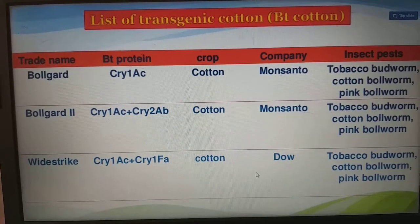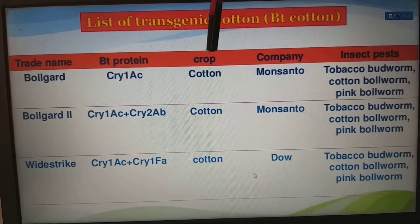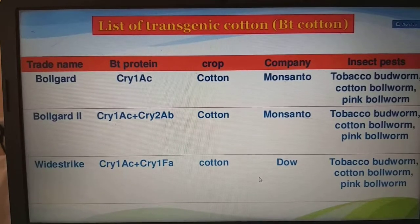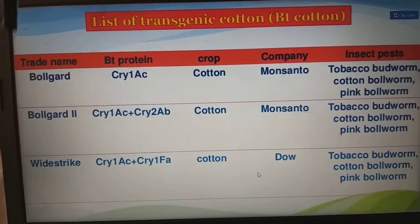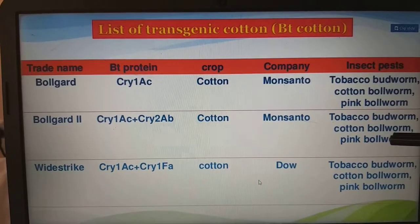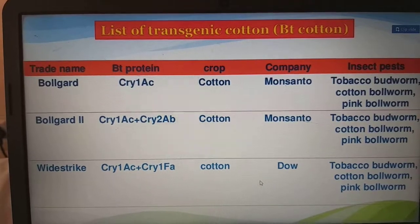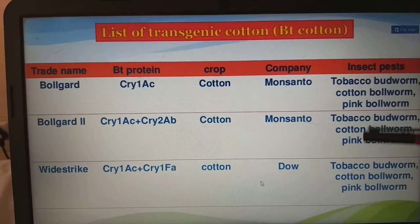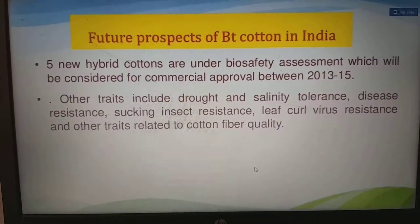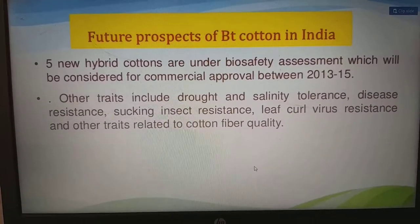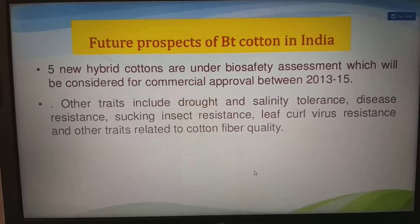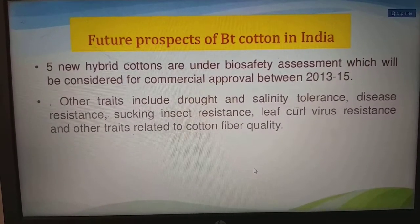The trade names producing Bt cotton include BollGard by Monsanto, which protects against tobacco budworm, cotton bollworm, and pink bollworm. BollGard 2 by the same company targets the same insect pests. WideStrike is produced by Dow, another company producing Bt cotton. Future prospects for Bt cotton in India include five new hybrid cottons under biosafety assessment for commercial approval between 2013 and 2015, with other traits including drought and salinity tolerance, disease resistance, sucking insect resistance, leaf curl virus resistance, and traits related to cotton fiber quality.